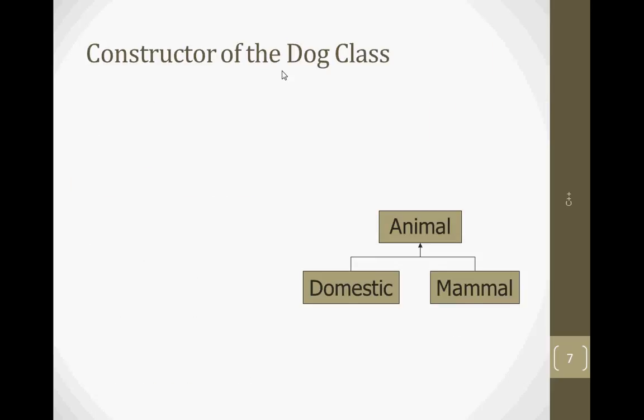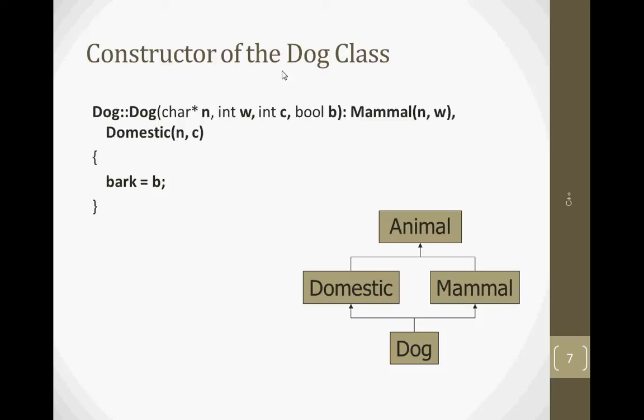Dog class constructor is created. Dog inherits from Domestic and Mammal. The Dog class constructor implementation takes parameters N, W, C, and B. Using the colon operator, it calls the Mammal class constructor and the Domestic class constructor.